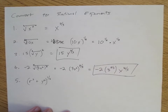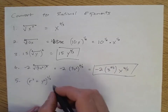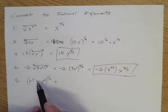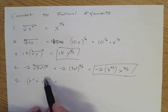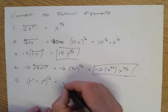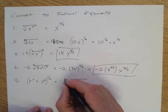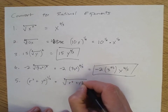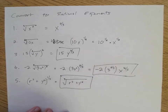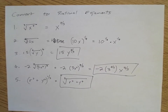Number five: because we have addition, I can't take both terms to the one-third separately — this is one factor, so we take the whole thing to the power of one-third. That looks like the cube root of r squared plus y squared, and that's as much as we can do for number five.